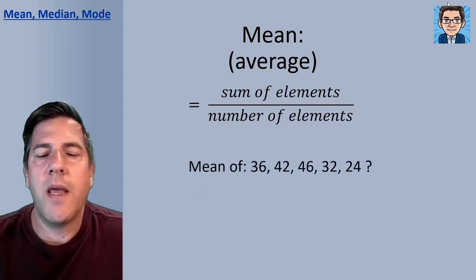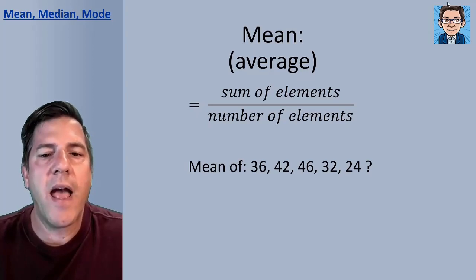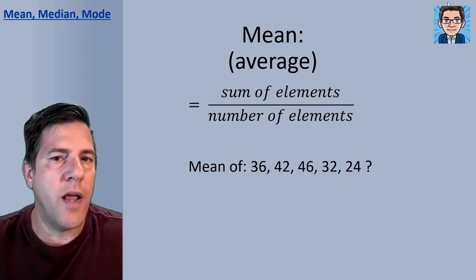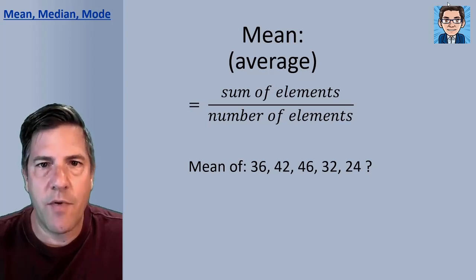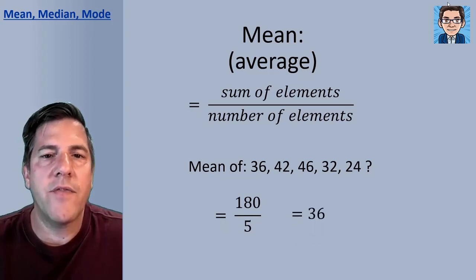So if we had the mean of this group of numbers, we would take and add the numbers up and get 180. And then there's five numbers here. So we'd go 180 divided by five. And we get an average of 36 or a mean of 36 for this group of numbers.